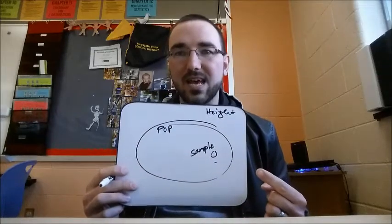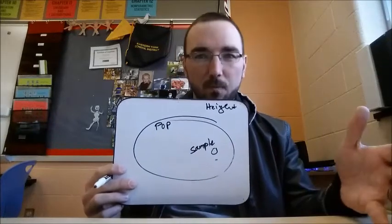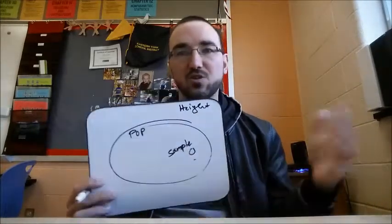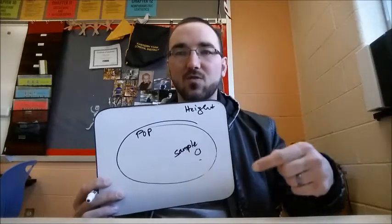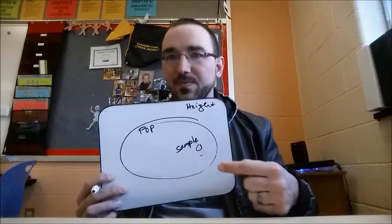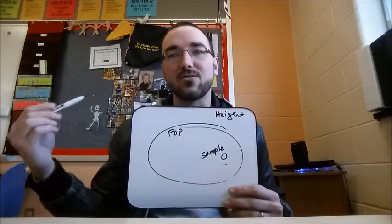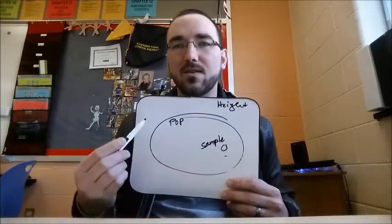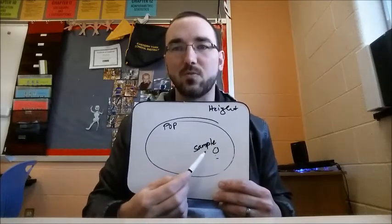Now with that being said, can random sampling end up leading you down the wrong path? Absolutely. Randomly, you could select the tallest people. So you got to keep that in perspective. There's a margin of error that comes with taking a sample. In addition, when we start talking about the formulas to calculate mean or standard deviation or variance of population versus sample, they're a little bit different. We have to take into account that error when we're talking about a sample.